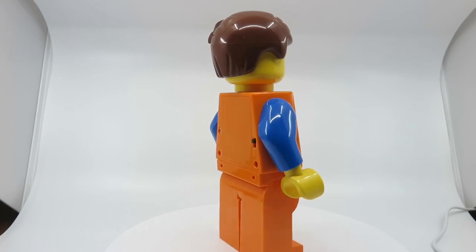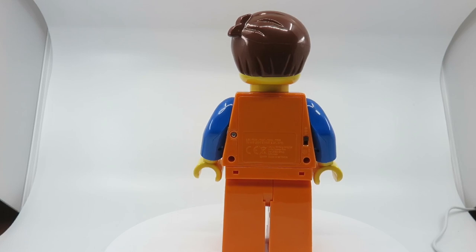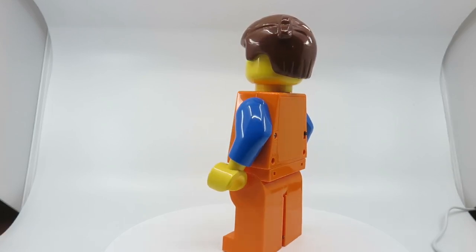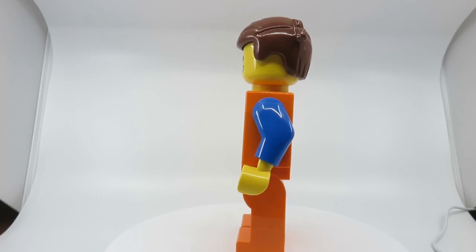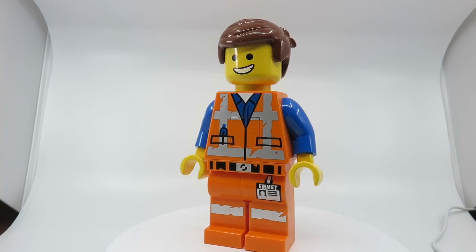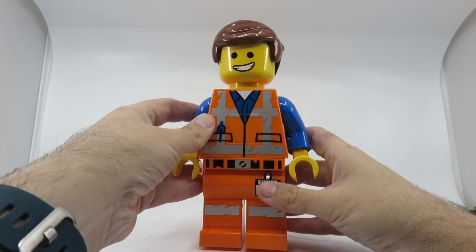The first one we have is Emmet. So this is an oversized figure. We're just doing a full rotation here. It's actually quite good from the front. You can hardly tell once you take the little sticker off for the power button. It looks like a giant oversized minifigure.